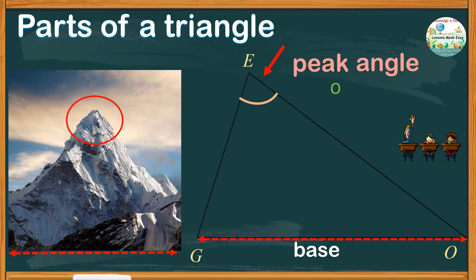The peak angle is always opposite the base. On the base, there are two angles, angle G and angle O. These are the base angles.